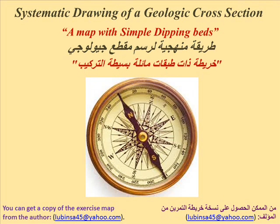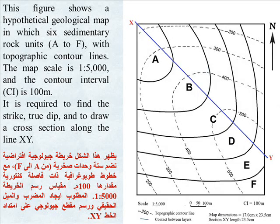Systematic drawing of a geologic cross-section. This figure shows a hypothetical geologic map in which six sedimentary rock units A to F with topographic contour lines. The map scale is 1 to 5000 and the contour interval is 100 meters. It is required to find strike, true dip, and draw a cross-section along the line X, Y.